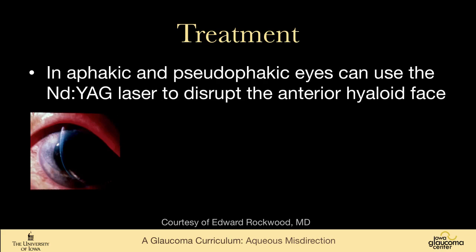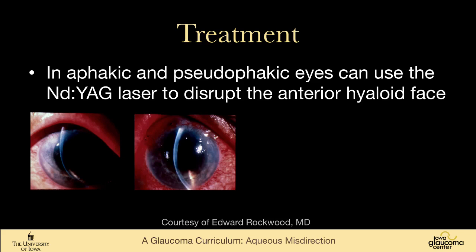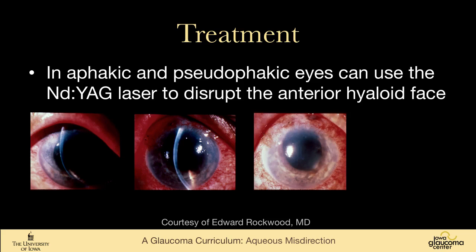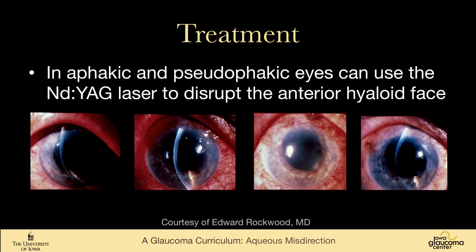One can also use the YAG laser to disrupt the compacted anterior hyaloid. In this series of pictures, the anterior chamber is completely collapsed with very high pressure. After the anterior hyaloid is disrupted, the chamber immediately becomes deeper. The cornea then becomes cloudy as aqueous accesses the traumatized cornea, but clears again over time.